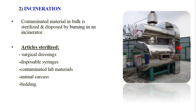A second dry heat method is incineration. An incinerator is used for the disposal and sterilization of bulk materials — for example, the large amount of waste generated during hospital activities. Items such as surgical dressings, disposable syringes, contaminated lab materials, animal carcasses, and bedding can all be incinerated under controlled conditions.